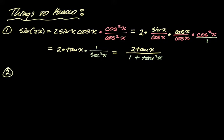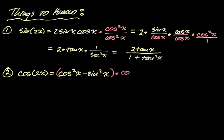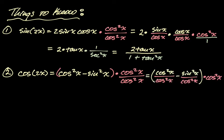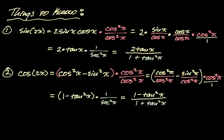The second thing we need is cosine of 2x. There are three choices; we choose cosine squared minus sine squared because we know where we're going. We do the same thing: multiply top and bottom by cosine squared over cosine squared, then distribute 1 over cosine squared so each of cosine squared and sine squared gets a cosine squared in the denominator. Cosine squared over cosine squared gives 1, and sine over cosine gives tan squared. Bring cosine squared to the denominator as secant squared, and since secant squared is 1 plus tan squared, we ultimately get 1 minus tan squared over 1 plus tan squared.